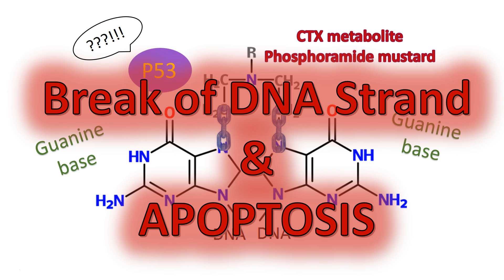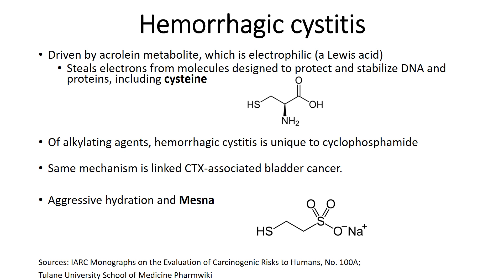Cyclophosphamide was initially developed for non-Hodgkin's lymphoma because soldiers showed decreased lymphocytes, and it was found to work for lymphoma. It also works for breast cancer, ovarian cancer, testicular cancer, and a whole bunch of others. Being non-cycle specific and non-cellular specific, it's just going to kill everything — which is part of the problem, because it is so cytotoxic.